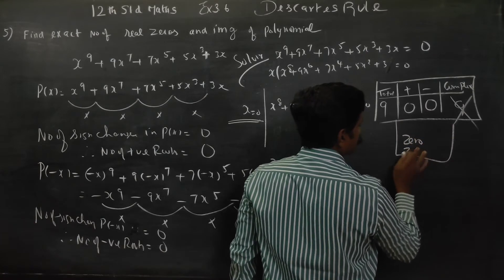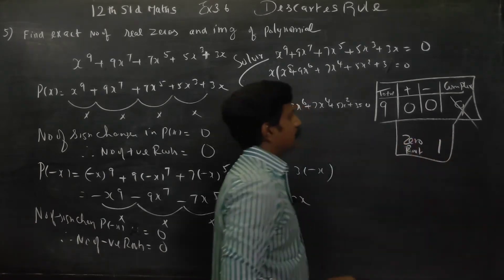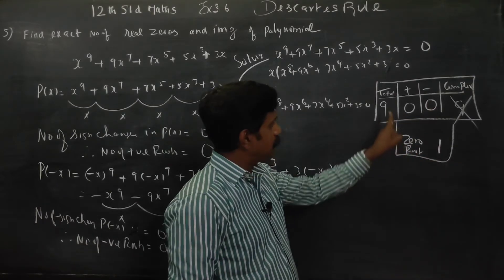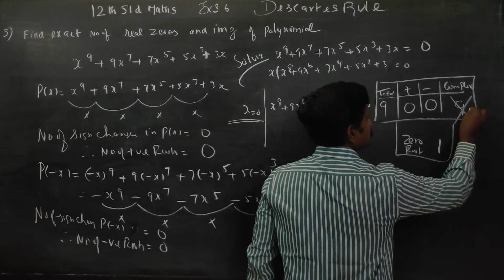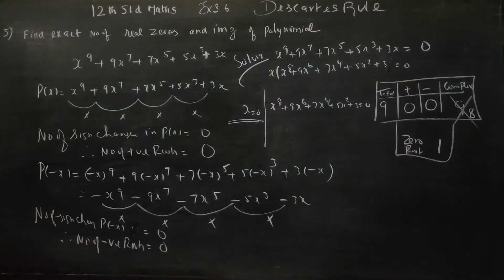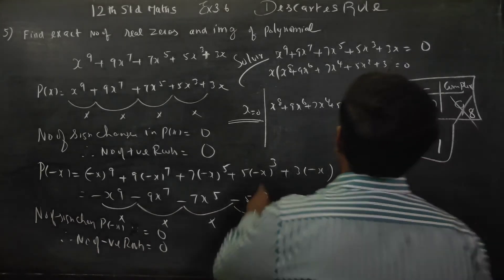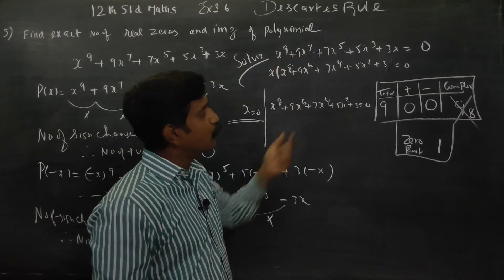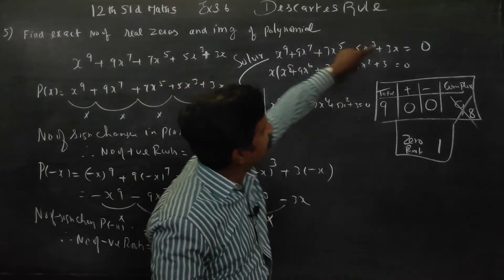x = 0 gives us one zero root. Zero plus zero plus one equals one. Then nine minus one is eight, which will be the complex roots. Eight is an even number, so this satisfies the rule. There is one zero root hiding inside this polynomial — we extract it.